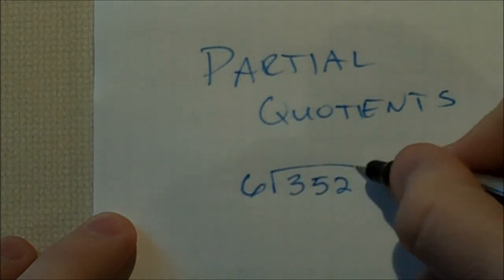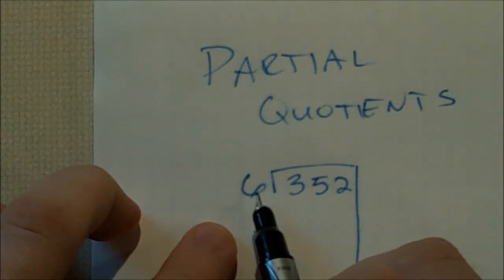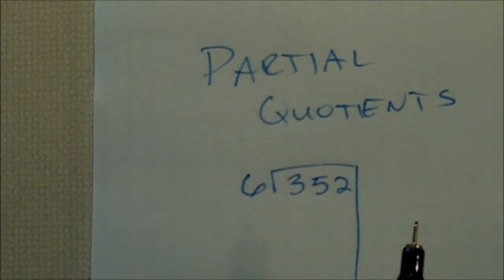What we ask ourselves is, how many times do we know that 6 can go into 352? Well, here's where our zero strategies and our knowledge of multiples comes into play.